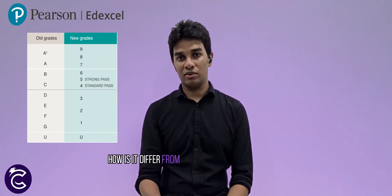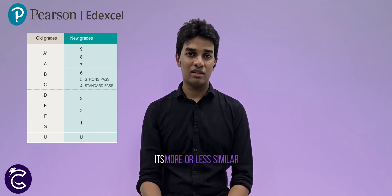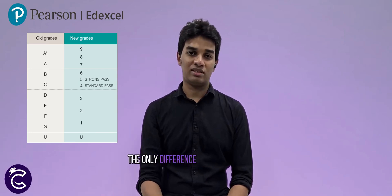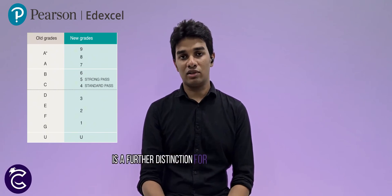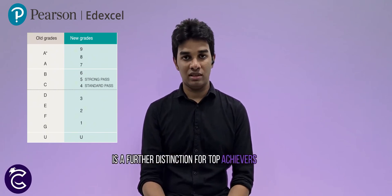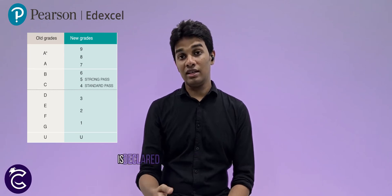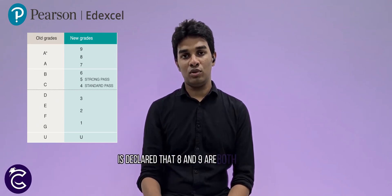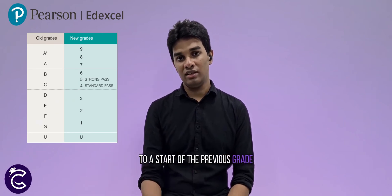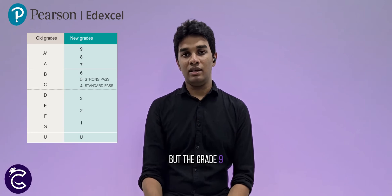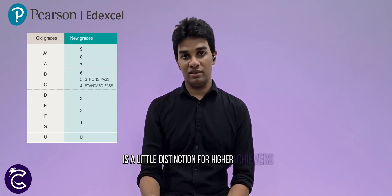How does it differ from the previous weighting system? It is more or less similar. The only difference is that grade 9 is a further distinction for top achievers. Although 8 and 9 are both declared equivalent to A* of the previous grading system, grade 9 is a little distinction specifically for higher achievers.